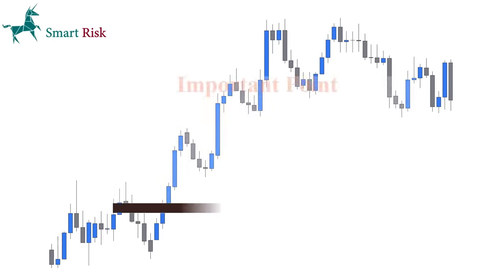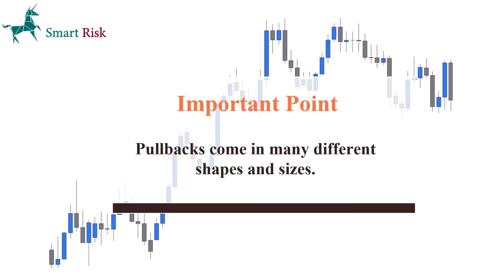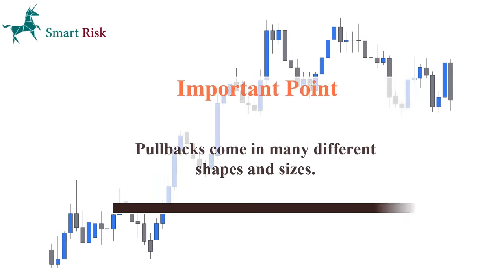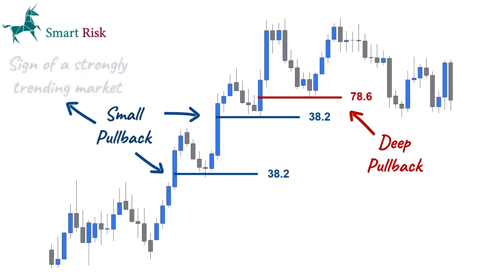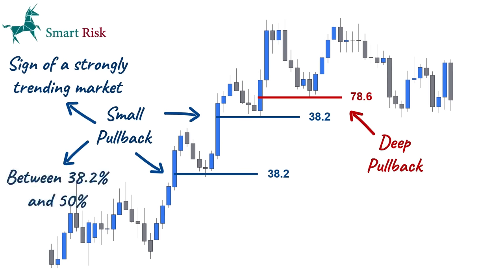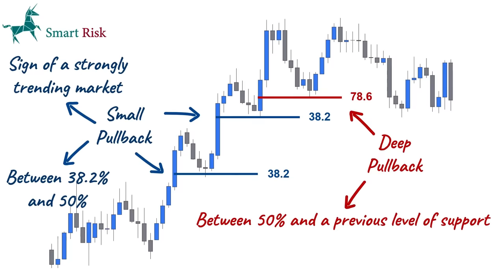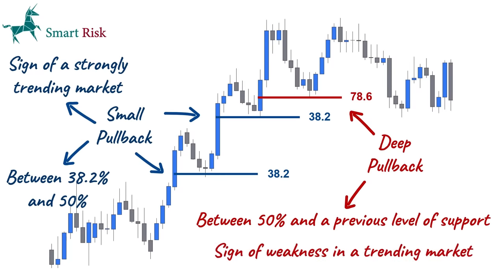Here is an important point: pullbacks come in many different shapes and sizes. We have two different types — small and deep pullbacks. A small pullback is a sign of a strongly trending market and will be somewhere between 38.2% and 50% retracement. On the other hand, a deep pullback will happen somewhere between 50% and a previous level of support, and it is a sign of weakness in a trending market.